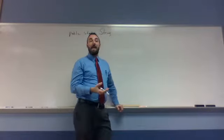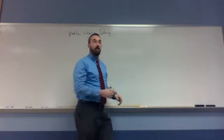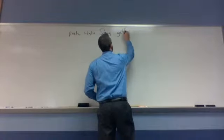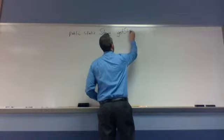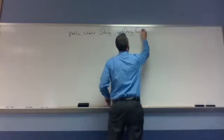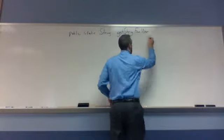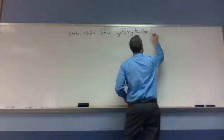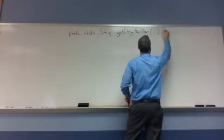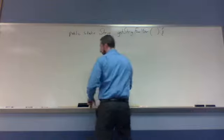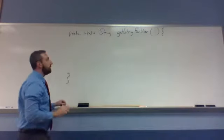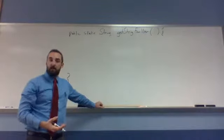Then we need a name for the method. How about we call this method getStringFromUser? It's very obvious what it does. The name of a method should give you some sense of what it does - we could call the method X, but that doesn't tell us anything. So we'll call it getStringFromUser. The telltale sign of being a method are these parentheses, so we'll write them. Then we need a code block, so we do an open curly brace and a closed curly brace.